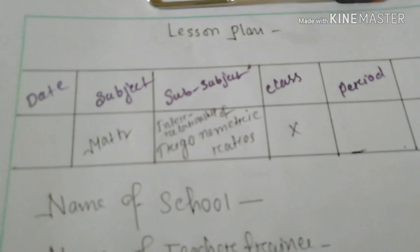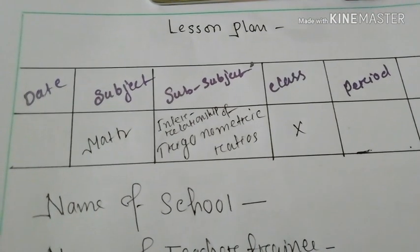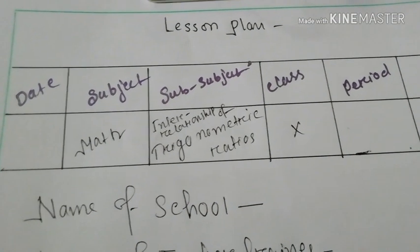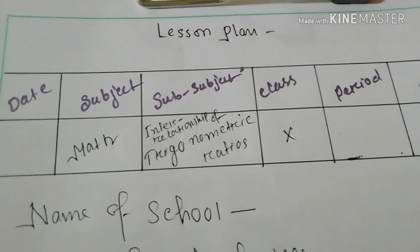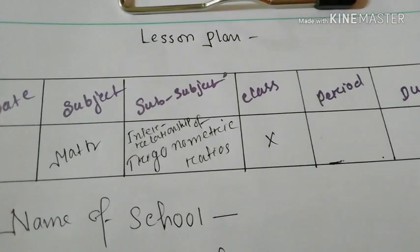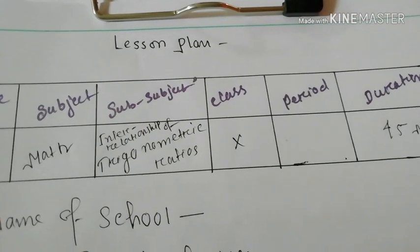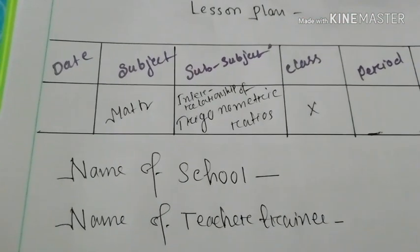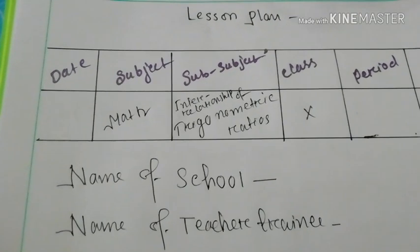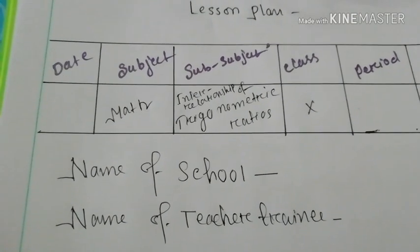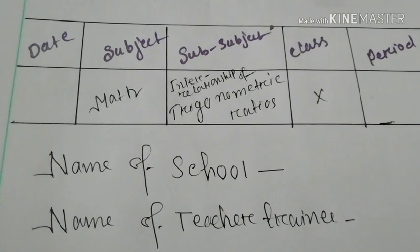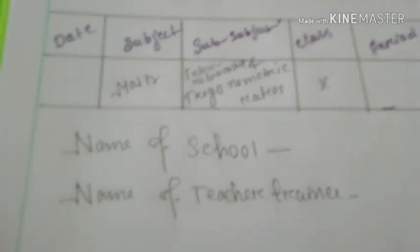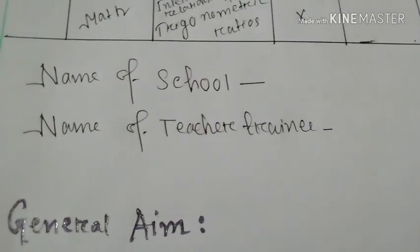This is the lesson plan of Class 20. First you have to write date, subject, sub-subject, class, period, and duration. The sub-subject is the interrelationship of trigonometric ratios. After that you have to write the name of the school and the name of the teacher.